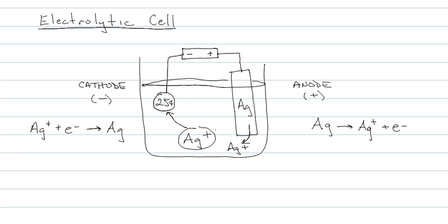Electrons still flow anode to cathode. In fact, the battery is considered to be an electron pump that pulls electrons off of the silver metal and places them onto the quarter. So that pretty much covers an electrolytic cell in terms of electroplating.